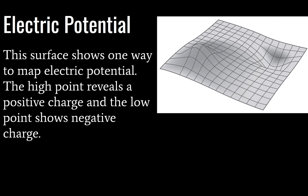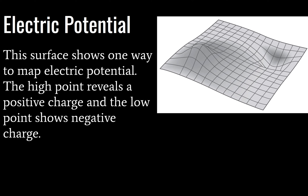We can map an electric potential field as a surface, and you can do this with a gravitational field as well. Some of you may have seen gravity wells expressed this way. This surface shows a positive charge as the big bump and a negative charge as the divot. You won't need to worry about this too much for IB physics, but if you continue studying electrical fields at university, this will become much more important.